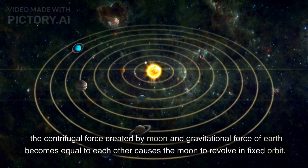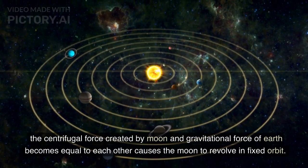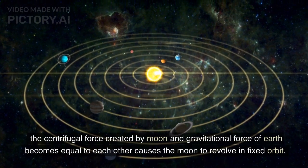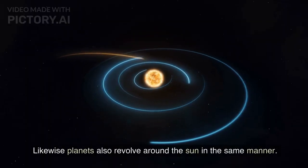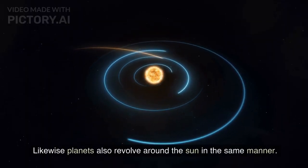The centrifugal force created by the moon and the gravitational force of Earth become equal to each other, causing the moon to revolve in a fixed orbit. Likewise, planets also revolve around the sun in the same manner.